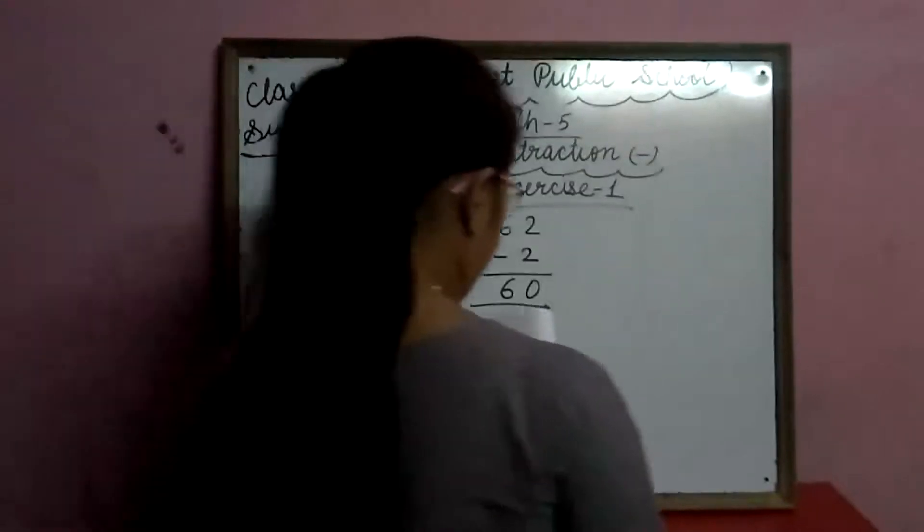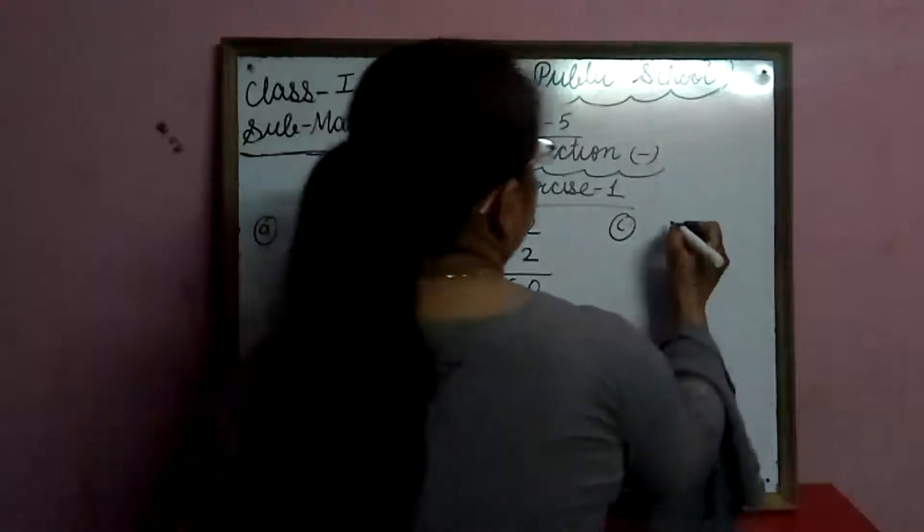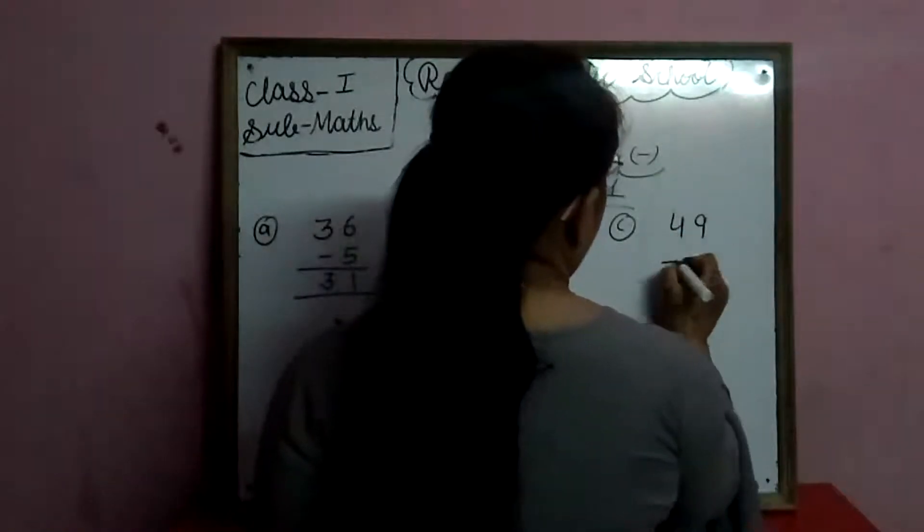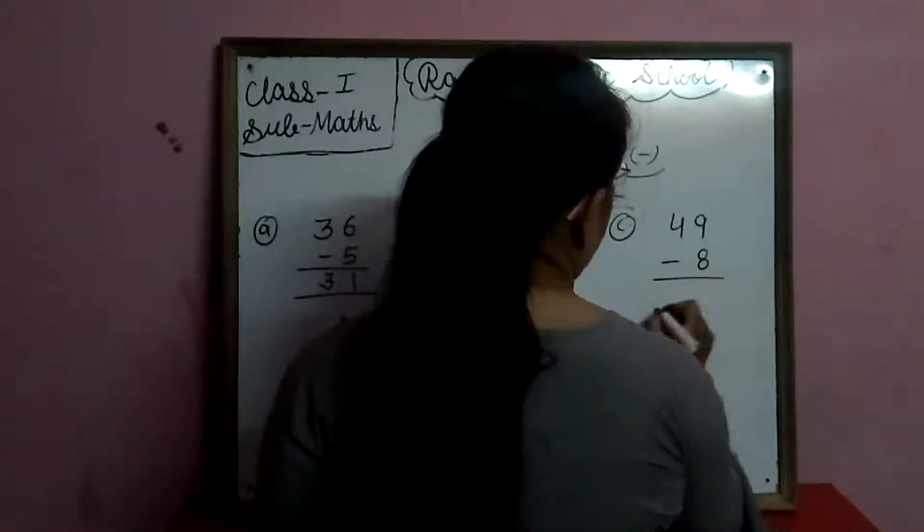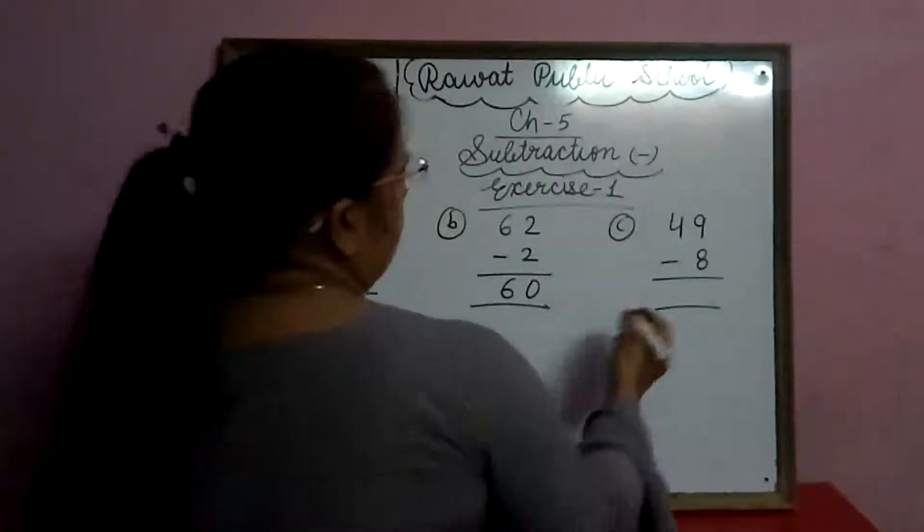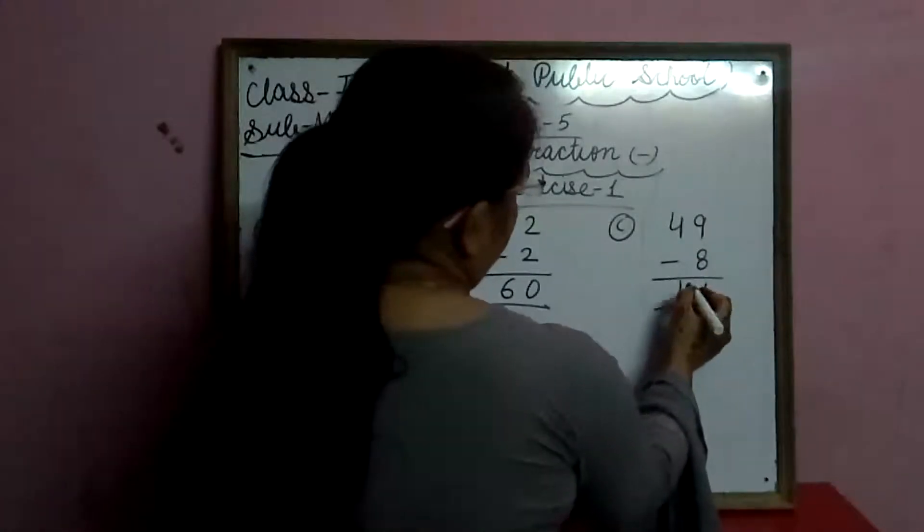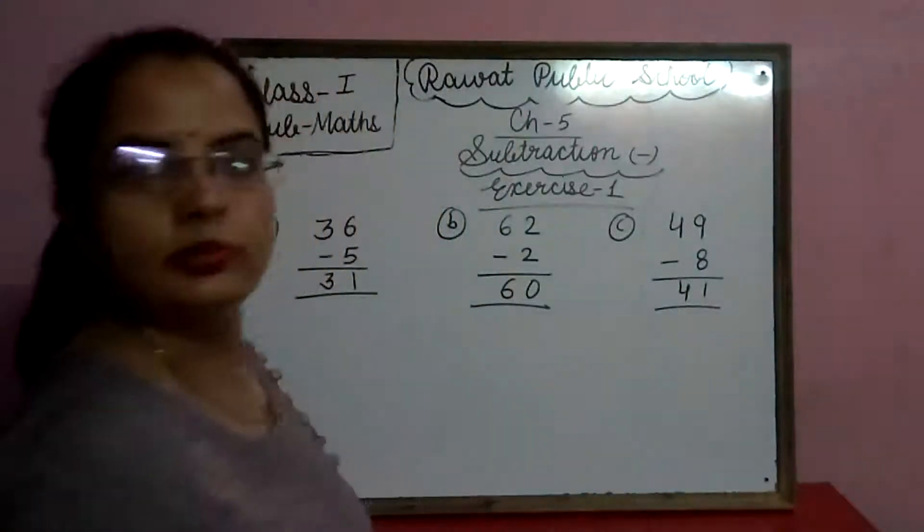C. 49. 49 mene se humi minus 8 karengo. 9 mene se 8 hum less karengo. Toh one aayega. 4 ki niche koi digit nahi hai, toh hum 4 as it is niche likh denge.